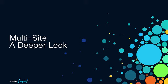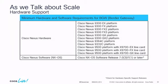Multi-site — a deeper look. These are all the hardware platforms that support the border gateway function. This is relevant only for the border gateway; the leaves can be anything. Border gateway hardware requirements span pretty much every switch we have in the data center.